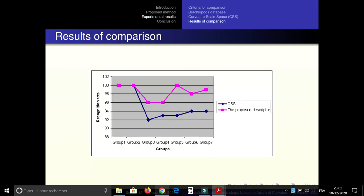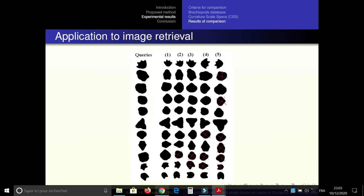Finally, the result of comparison. We applied many groups of Brachiopods. And we find that the proposed descriptor gave the highest, the greatest value of recognition rate compared to the curvature scale space. And also the proposed descriptor is fast to compute compared to CSS. Application to image retrieval applied many queries for our database.